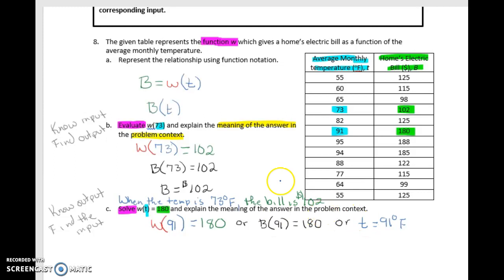And now we want to answer it again in a complete sentence. So we know that 91 is the temperature. So if the temp is 91 degrees Fahrenheit, the bill is $180.